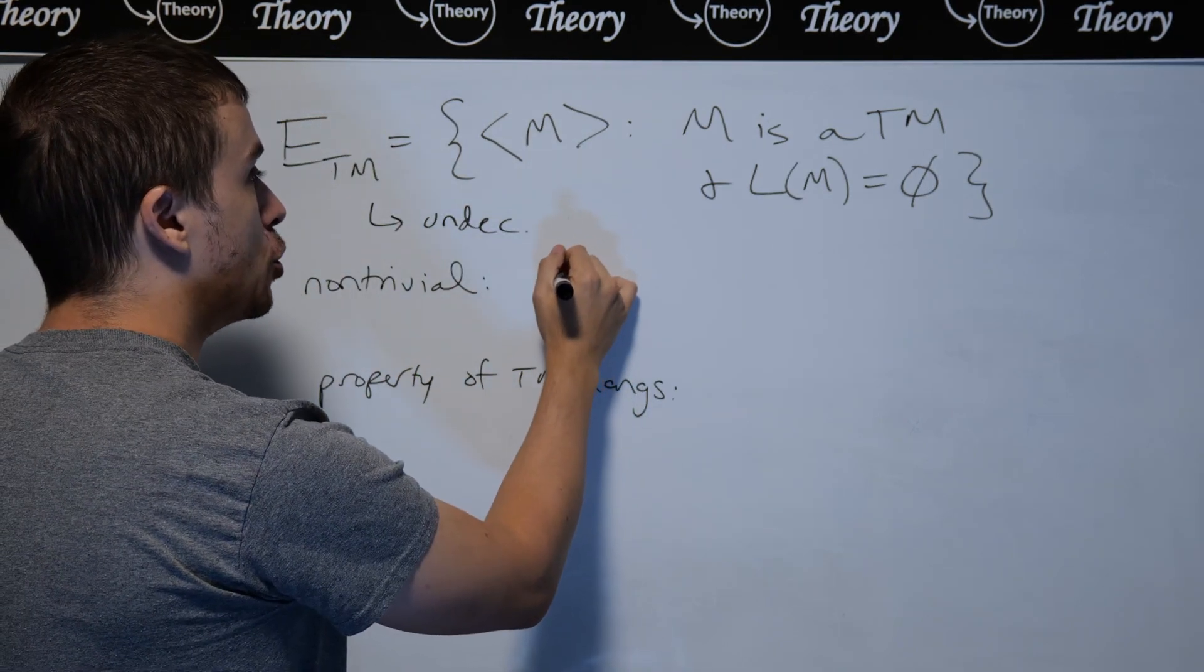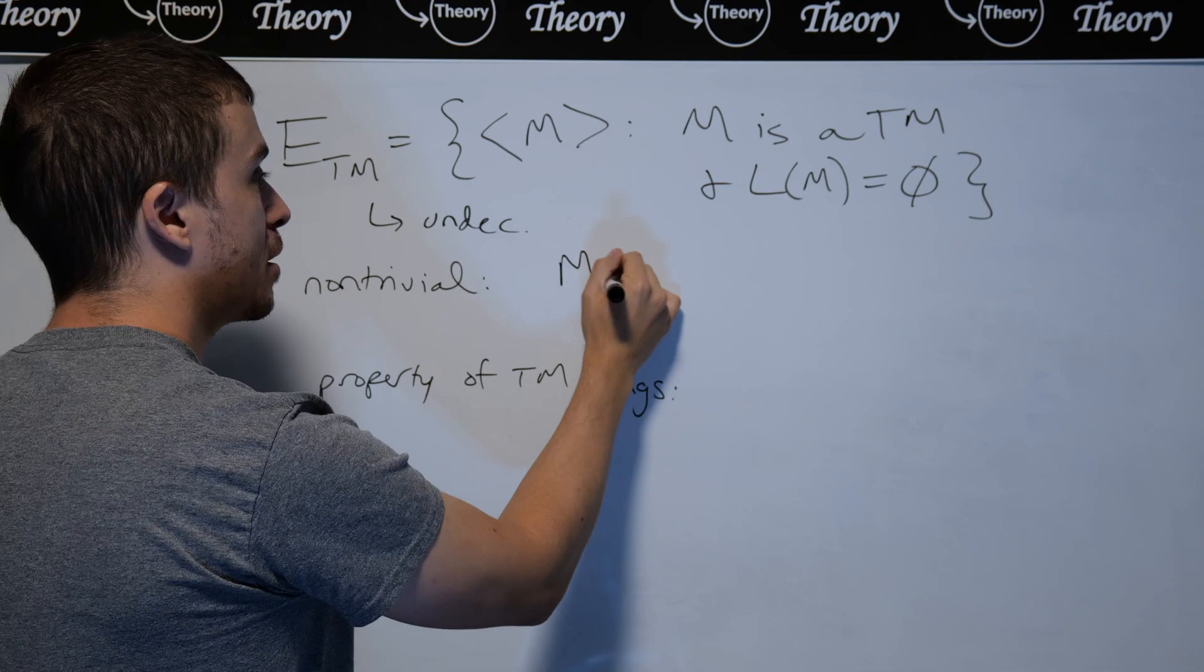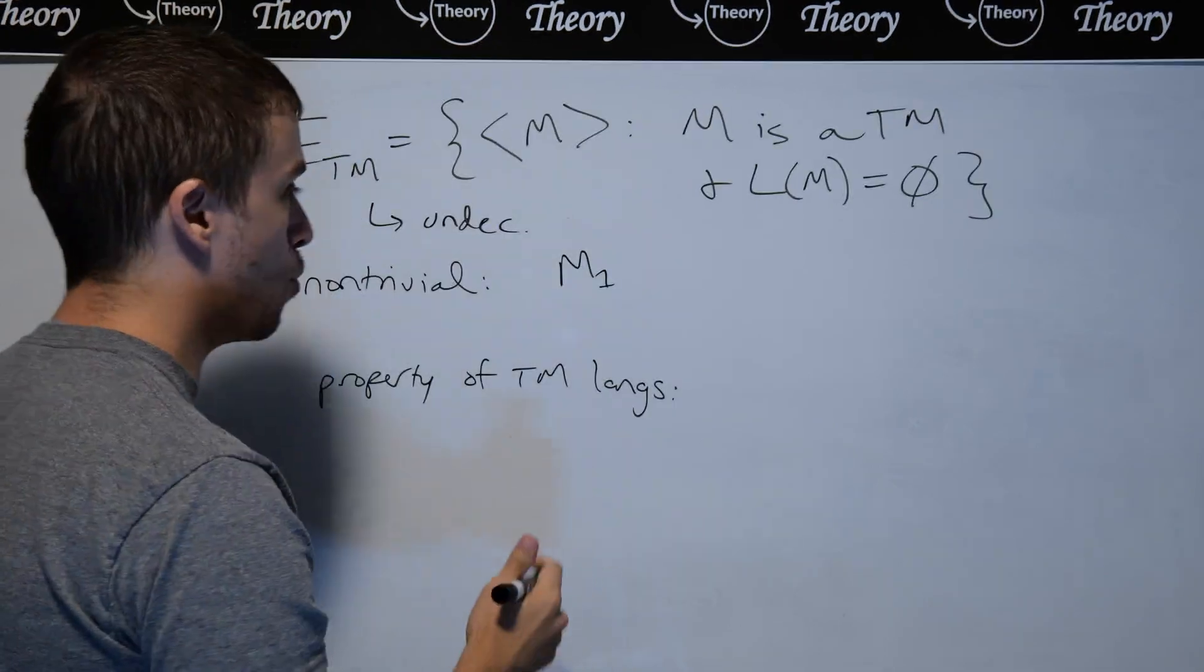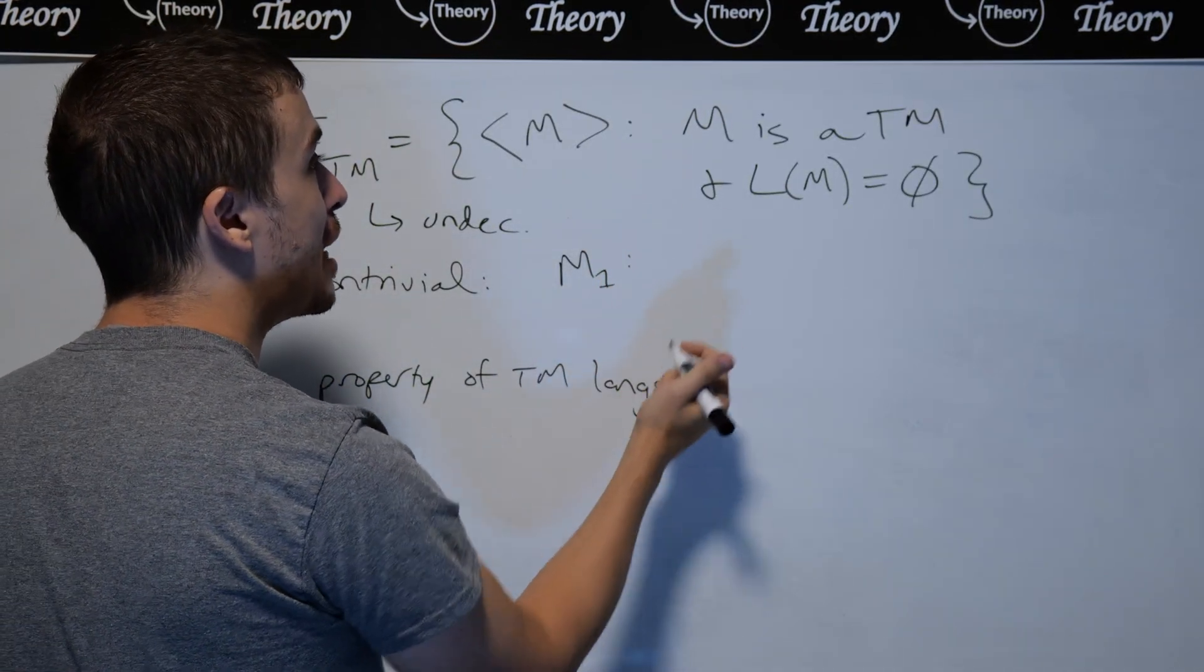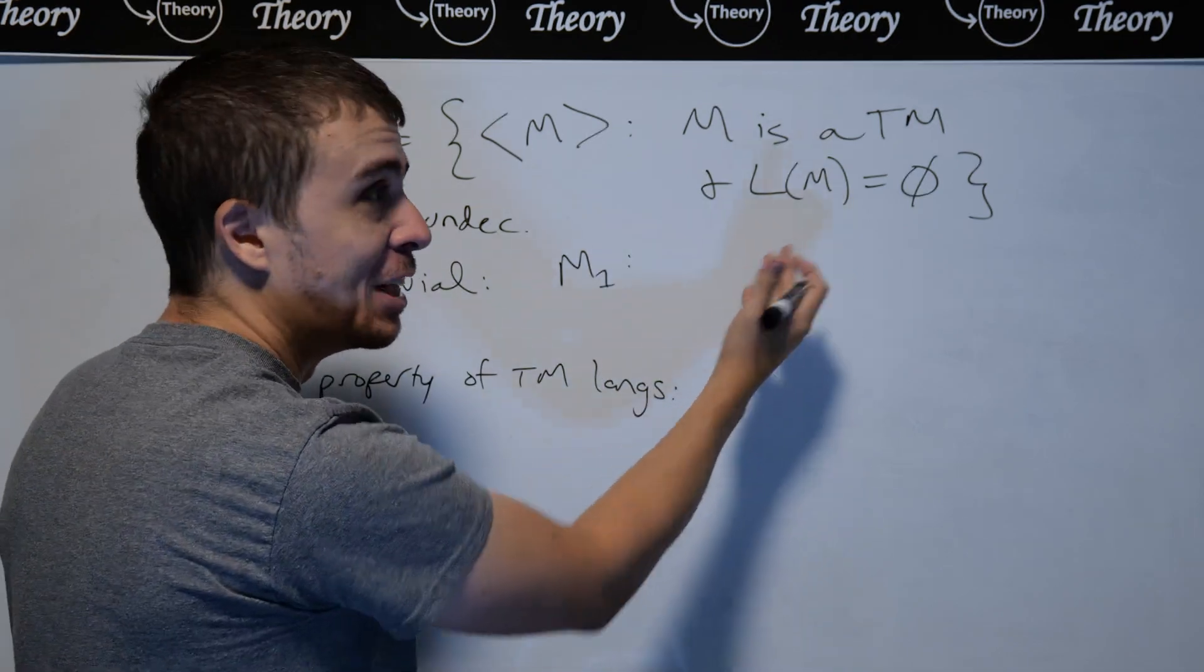So what's an example of a Turing machine that's in there? Well, let's consider a machine I'm going to call M1 whose language is going to be empty because it has to be in there.